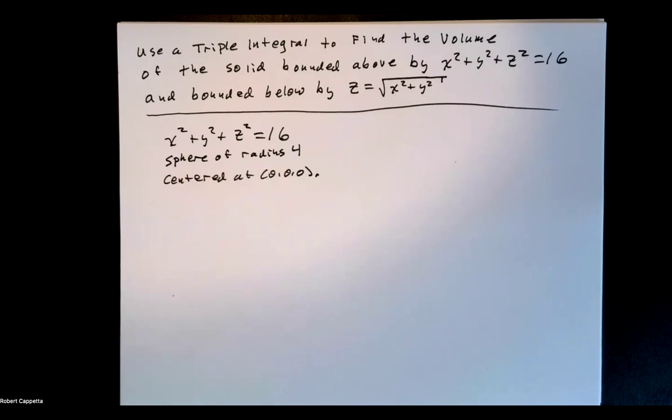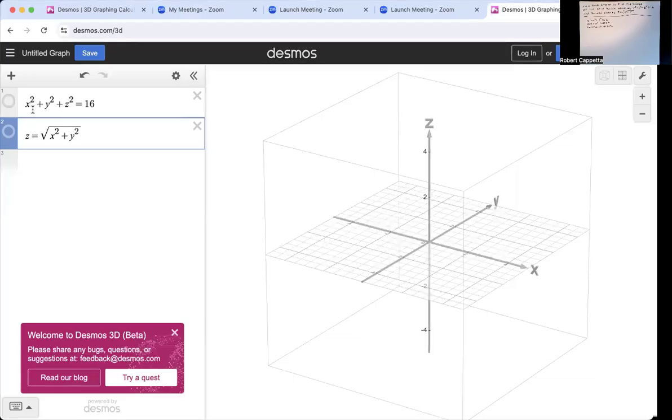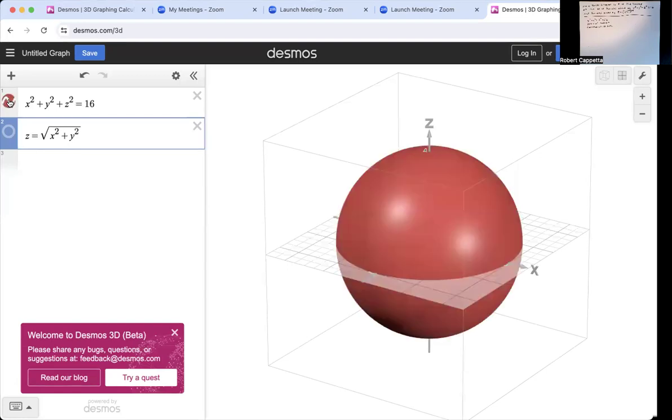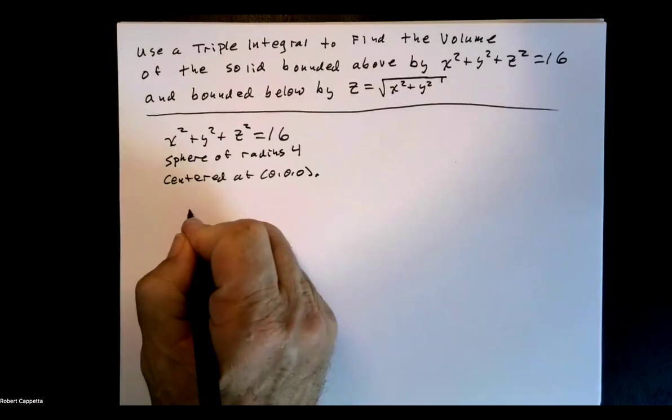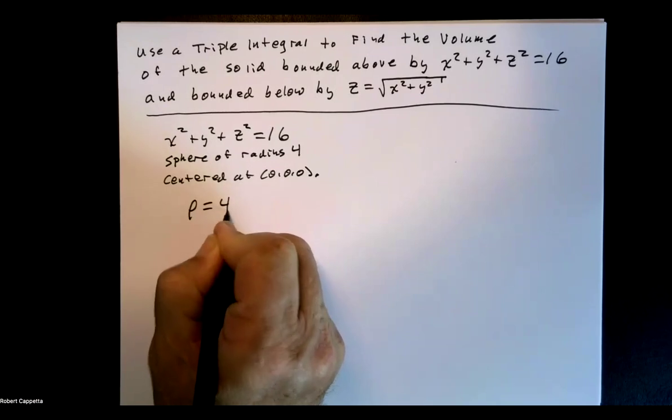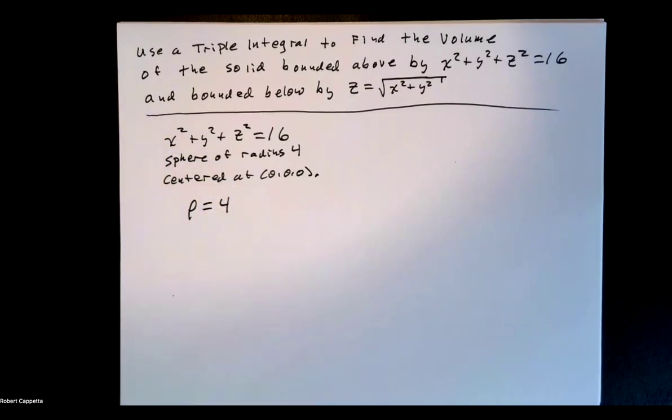So let's take a look at a picture of that. X squared plus y squared plus z squared equals 16. There's our sphere of radius 4. Now, what is that in spherical coordinates? Well, sphere of radius 4, rho equals 4 would be the equation of that sphere in spherical coordinates.